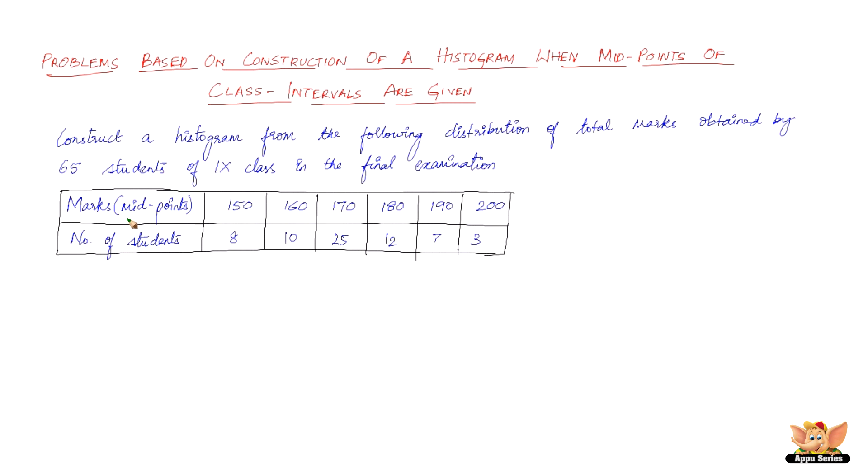Now the given data here is marks in the form of midpoints. Usually we have data of class intervals like 150 to 160, 160 to 170 and so on, but here the marks are given in the form of midpoints: 150, 160, 170, 180, 190, 200. The number of students is 8, 10, 25, 12, 7, 3.